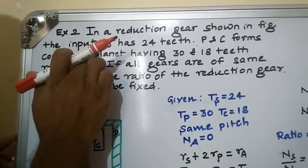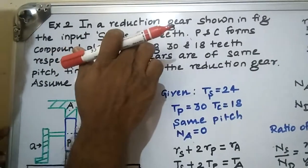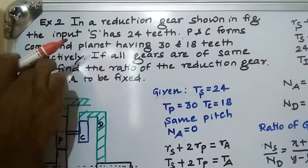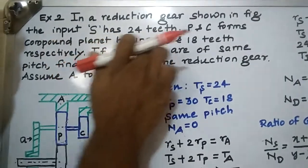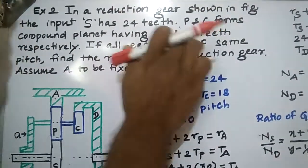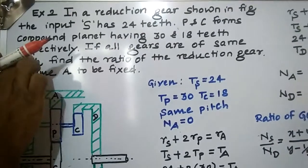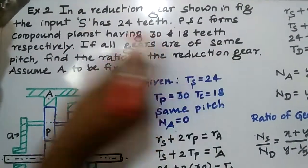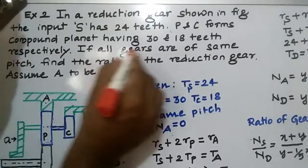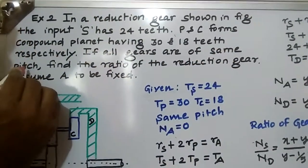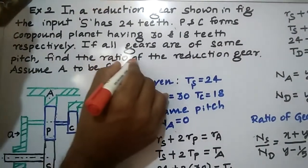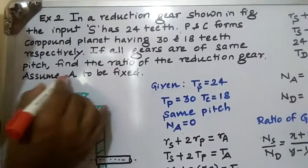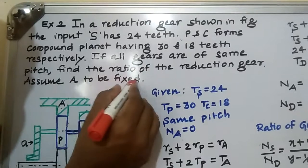The input S is given as a number of teeth equal to 24 teeth. P and C form a compound gear train having 30 teeth and 18 teeth respectively. If all the gears are of the same pitch, find the ratio of the reduction gear. Assume that A is fixed.